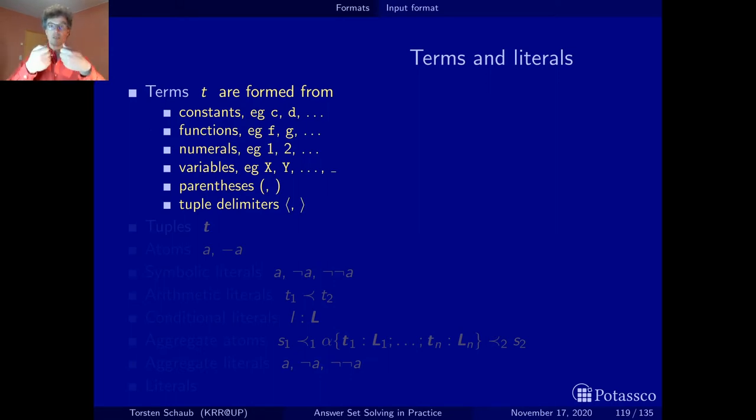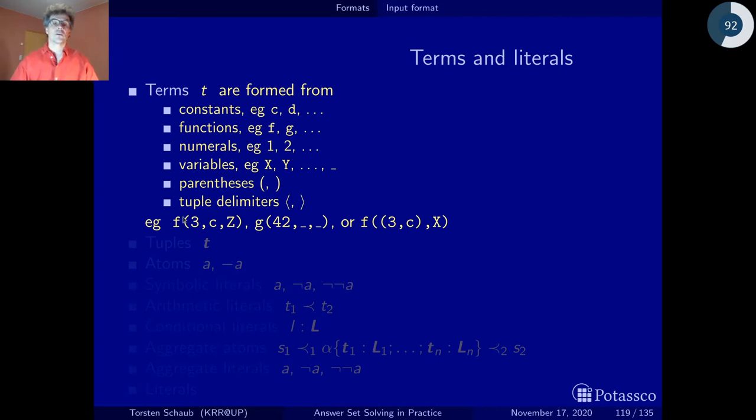Here are some examples. Here is a ternary function symbol that takes three arguments: a numeral, a constant, and a variable. Keep in mind that variables always start with uppercase letters, while constants and function symbols start with lowercase letters. I normally try to use f and g for functions, c and d for constants, and x and y for variables, and some arabic numerals for numbers.